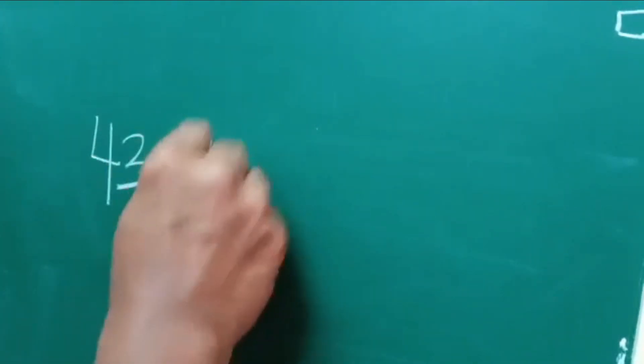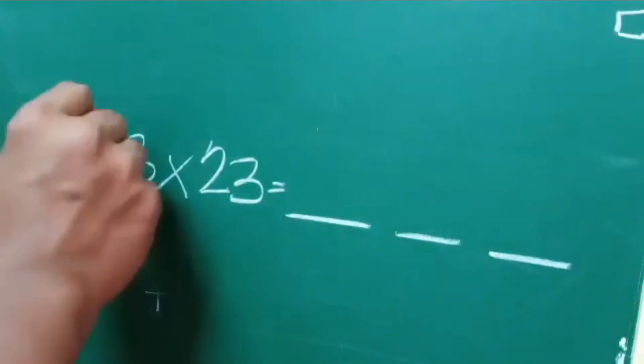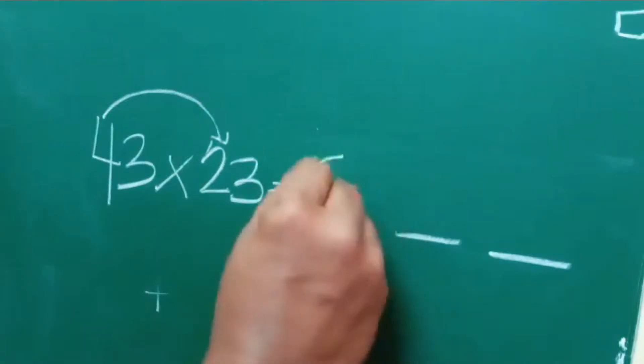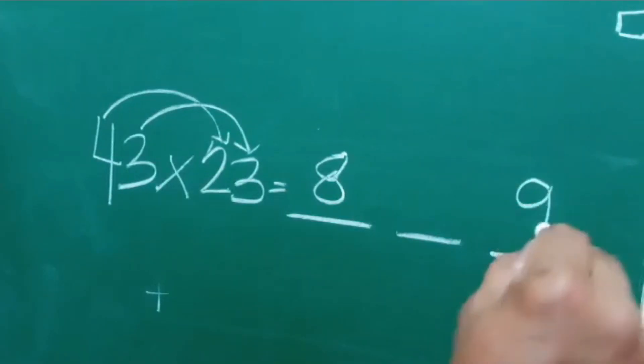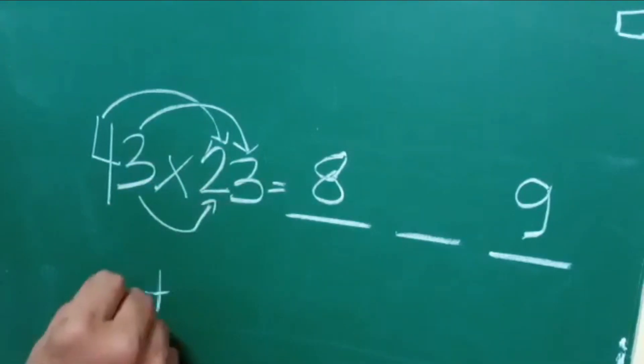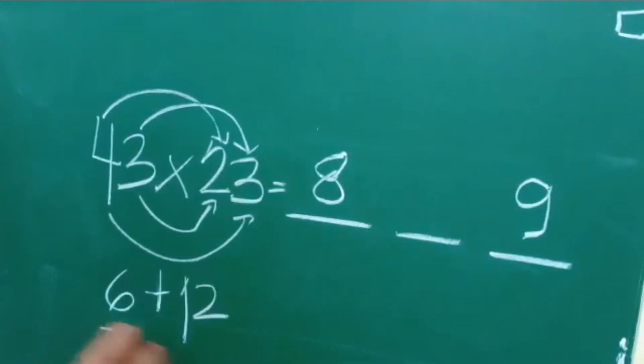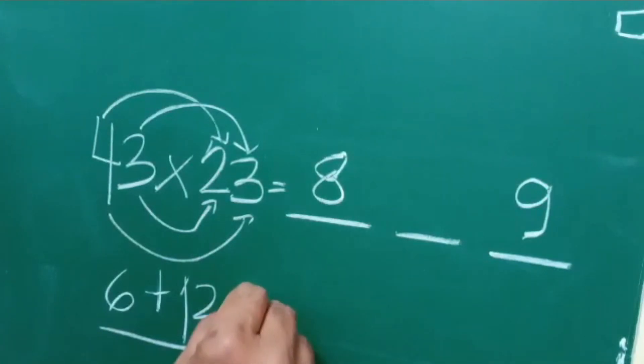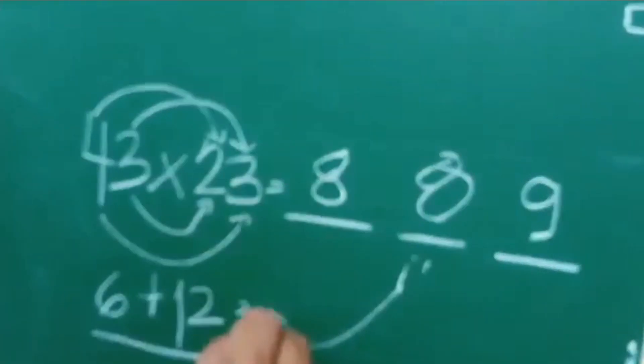So 43 times 23. 4 times 2 is equal to 8. Then 3 times 3 is equal to 9. At the bottom, 3 times 2 is equal to 6. 4 times 3 is equal to 12. So the sum of the two is equal to 18. We cannot put the 18 immediately here, so what we have to do is put the 8 here and then we have to put the 1 here.